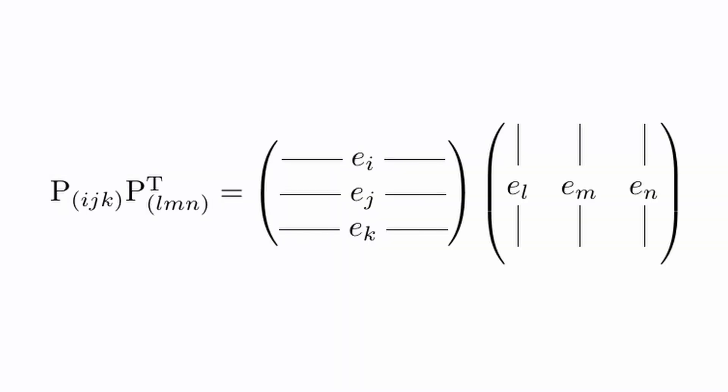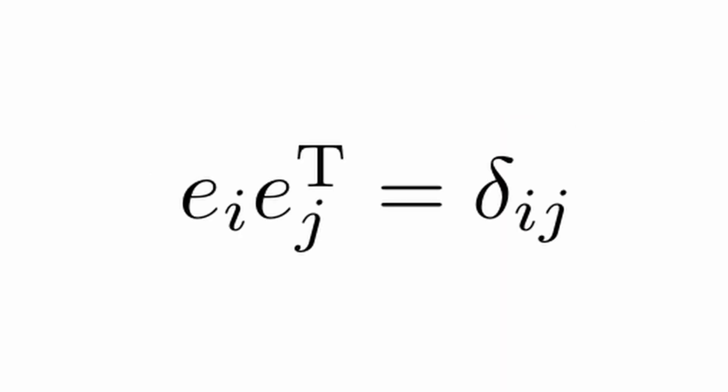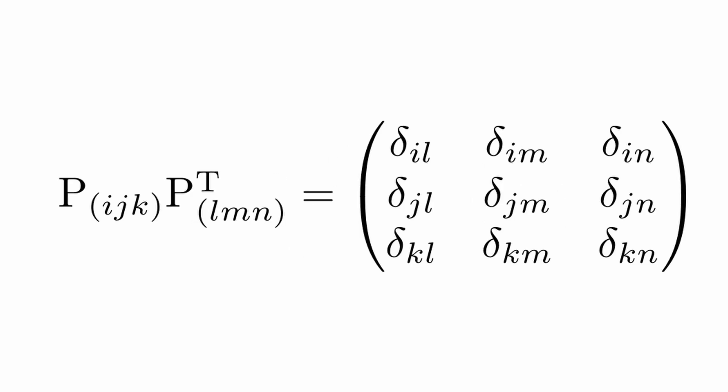Now look at the product of a P matrix with a P transpose matrix. If we write P i,j,k times P l,m,n transpose and do the matrix multiplication in the usual way of multiplying rows against columns, we can make use of the orthonormality of the E vectors to get P i,j,k times P l,m,n transpose equal to this Kronecker delta matrix.